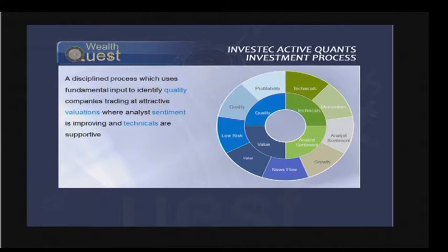You can see the styles in that slide — on the outer circle we go into a lot of detail, but looking at the inner circle there are four key ones. Really what we want is to buy quality companies trading at attractive valuations where analyst sentiment is improving and technicals are supportive. The left-hand side of that chart is well covered by most fundamental managers. The right-hand side is very neglected in the South African market, and therefore we think there's a great opportunity to exploit there.